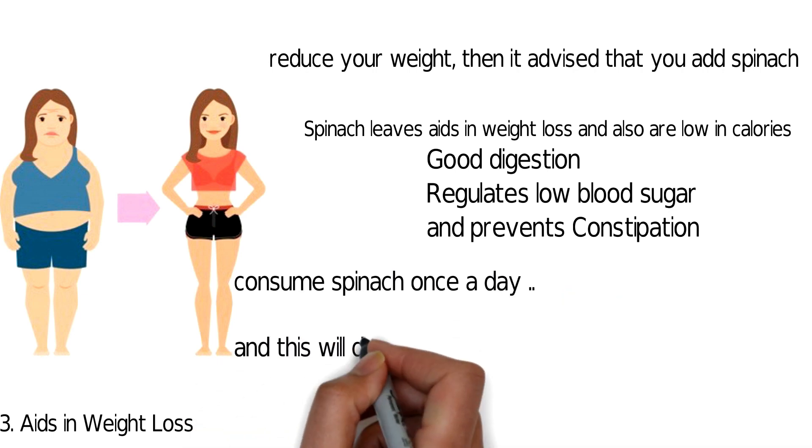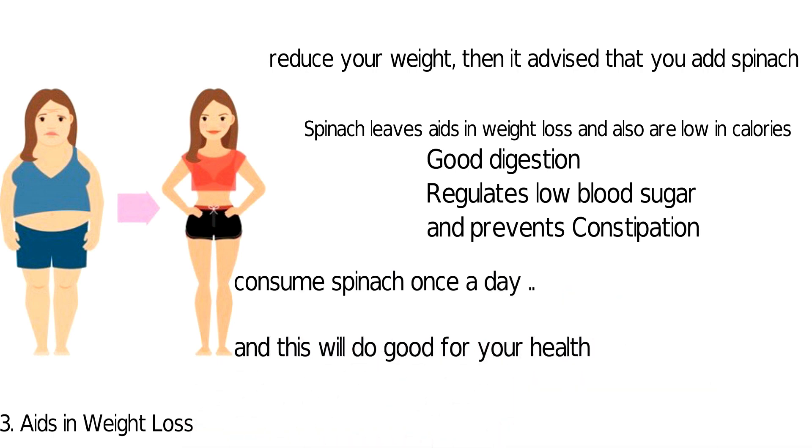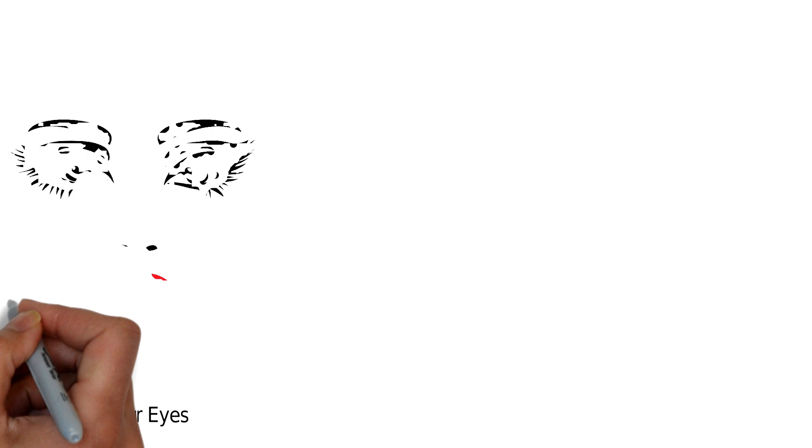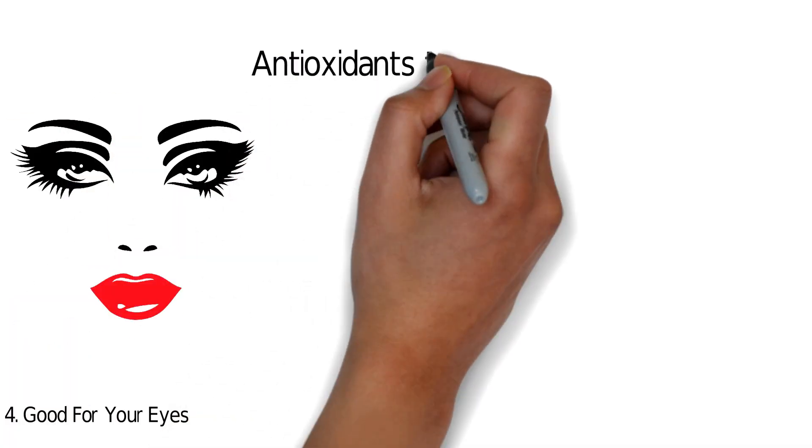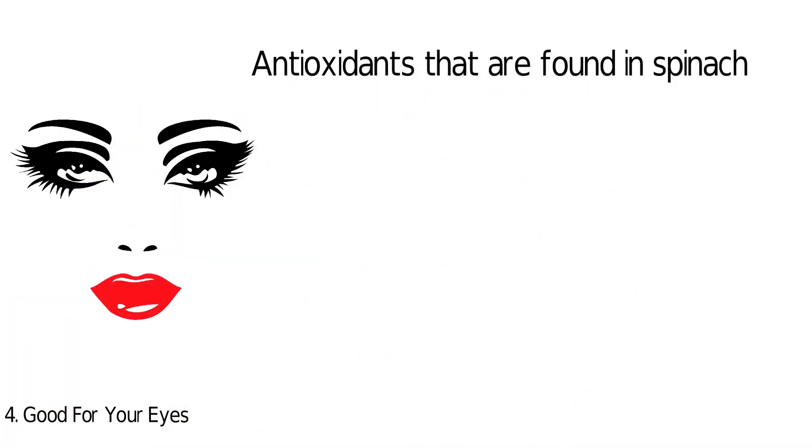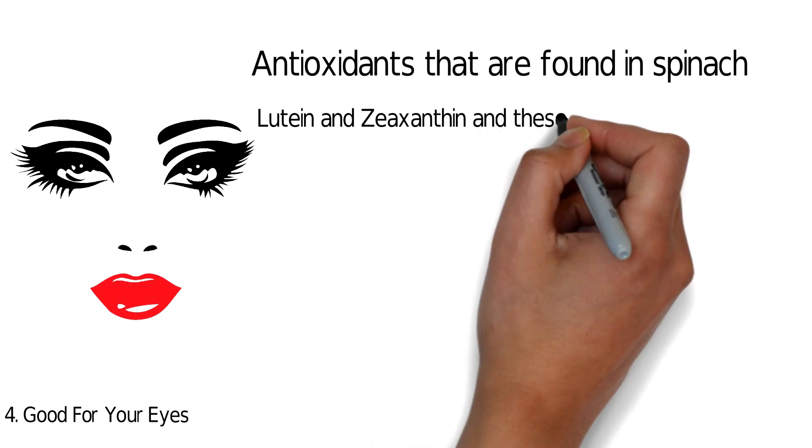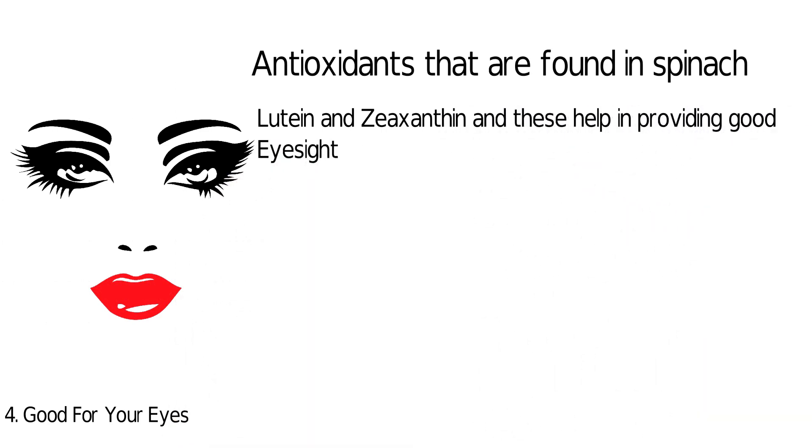The fourth one: good for your eyes. The antioxidants that are found in spinach are lutein and zeaxanthin, and these help in providing good eyesight.